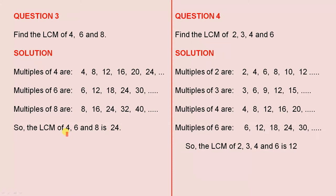So the LCM of 4, 6 and 8 is 24, because we have 24 here, 24 here and 24 here. It is the lowest number that occurs in all of the groups — it has to be the same number.